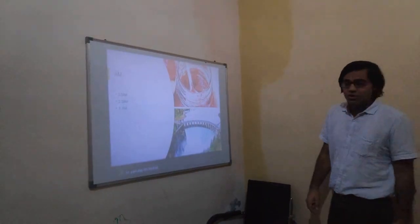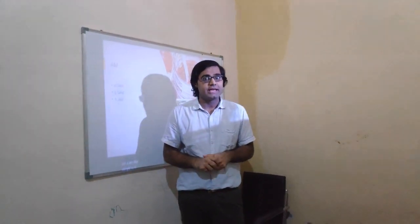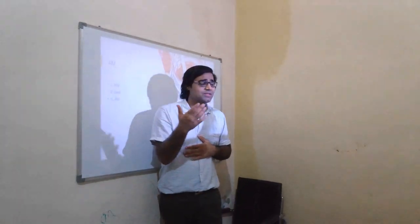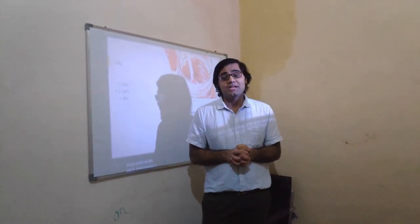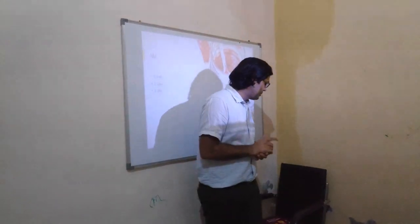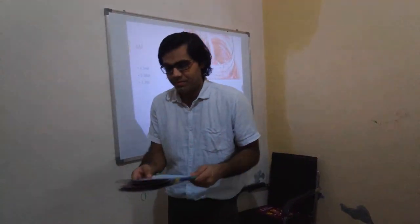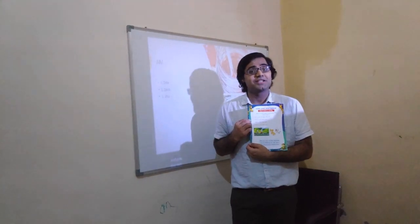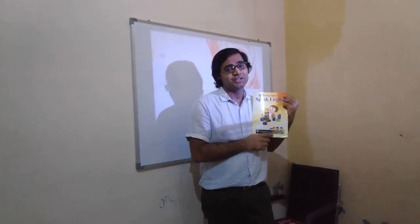Alright, so this was our last slide, children. That was the topic we covered in the last online class. If you were not able to attend, you can take help of this video. The chapter is Unit 5, and the page number is 21 of the book — the yellow colored Phonics Junior book.